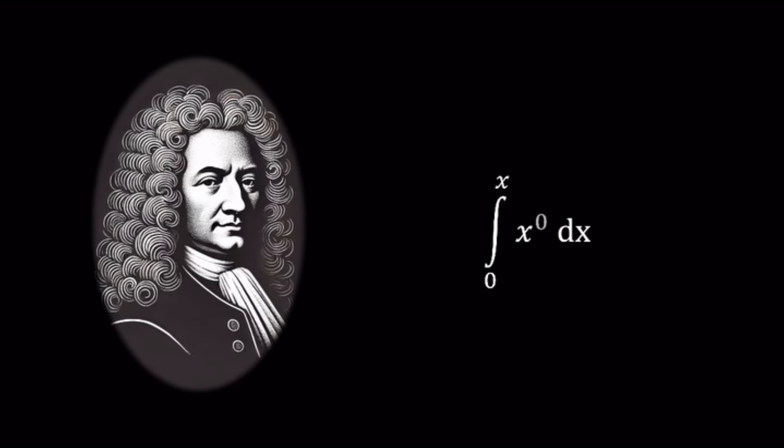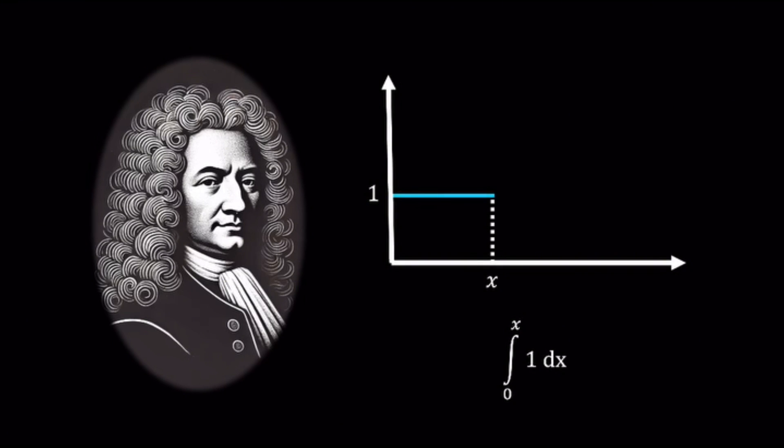Start with a simple function where x is raised to the power of 0. This means the function is just a constant, 1. The area under this flat line, from 0 to x, is simply x. This tells us that the integral of 1 is x.